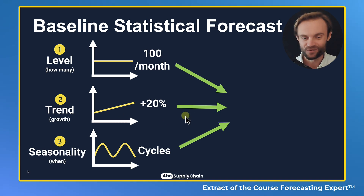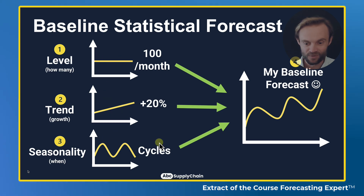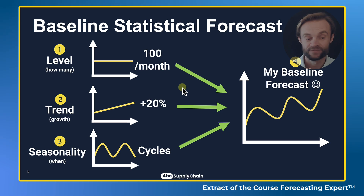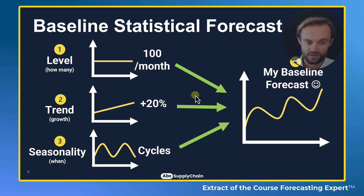And once you have it, you can create what we call the baseline forecast. So you have level plus trend plus seasonality, and you can see you have the waves, you have the trend, and you have your level as well. We're going to give you an example in Excel after, but this is a very good start.